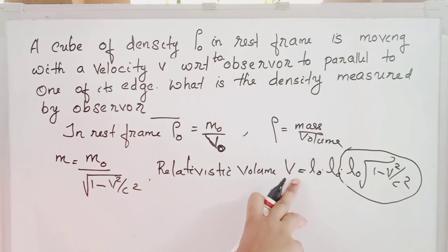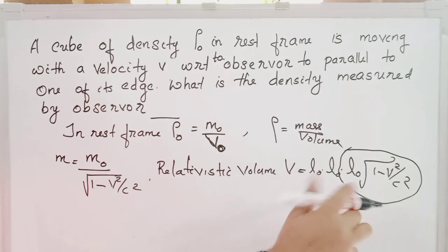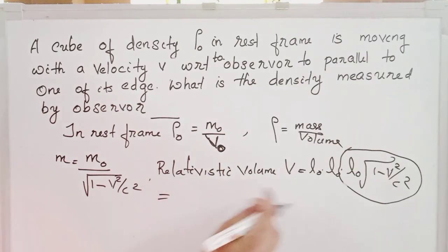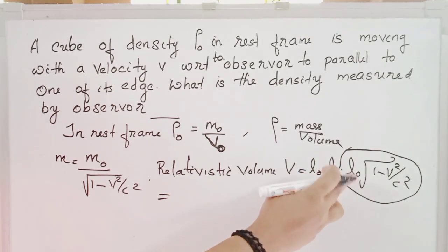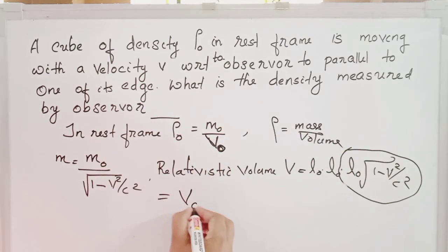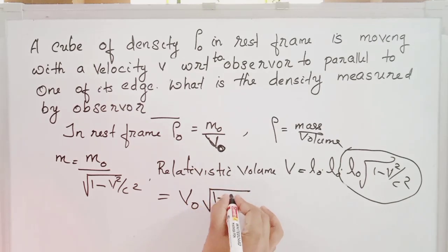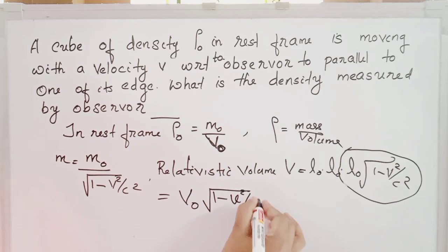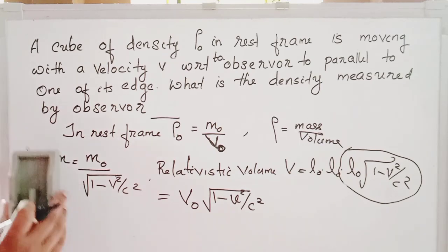Therefore, V equals L₀ × L₀ × L₀ × √(1 − v²/c²), which equals V₀ × √(1 − v²/c²), since L₀ cubed equals V₀.